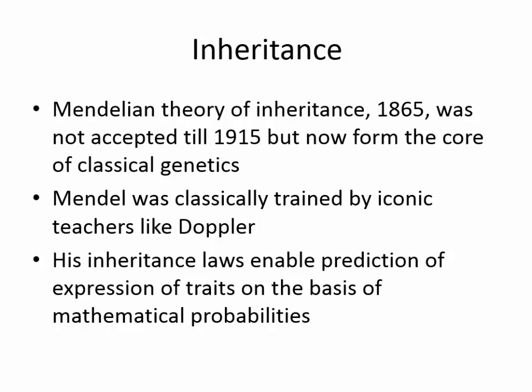These are pretty old ideas. Mendel started his theory of inheritance in 1865. He was a monk, and he was very learned. One of his teachers was Doppler, so he had some really good training. He himself didn't really believe his results because he wasn't really sure of what he was doing. He was very meticulous and kept really good records. But his work was largely unaccepted and sort of forgotten for quite some time — for 50 years — and then it was rediscovered. His theory wasn't actually accepted until 1915. But his inheritance laws enable prediction of expression of traits on the basis of mathematical probabilities.